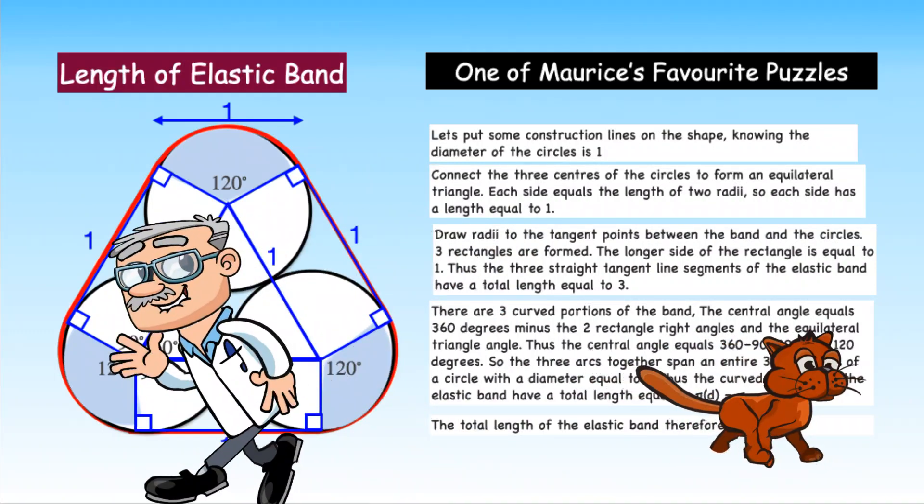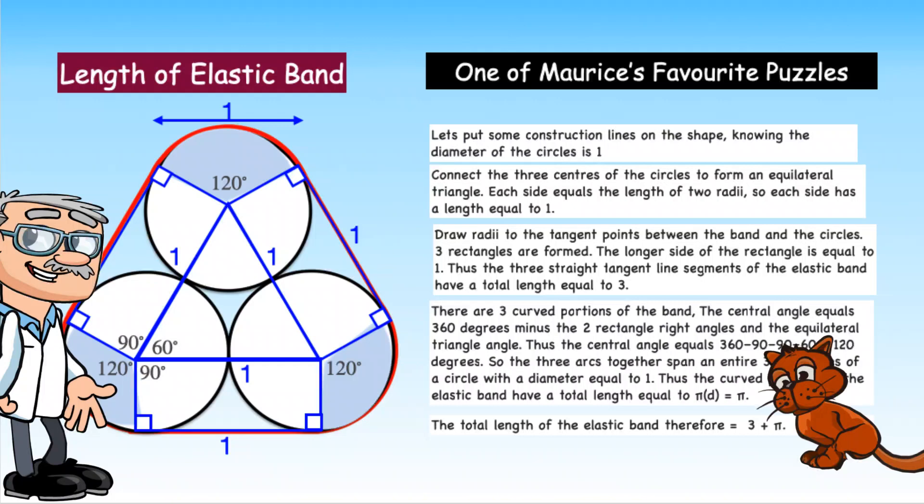So the three arcs together span an entire 360 degrees of a circle with a diameter equal to one. Thus the curved portions of the elastic band have a total length equal to pi times the diameter which equals one, which equals pi.